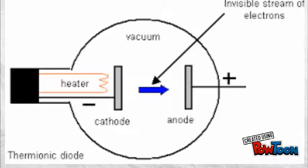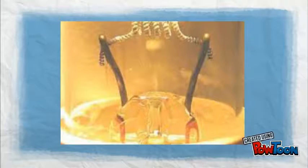Thermionic emission is the emission of electrons from a heated metal, which is the filament, on the cathode side of the x-ray tube. The cathode has its filament circuit that supplies it with the necessary filament current to heat it up.